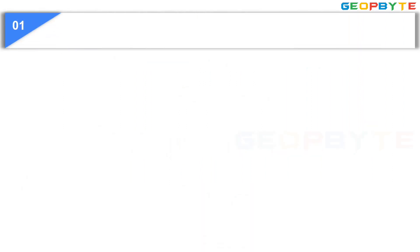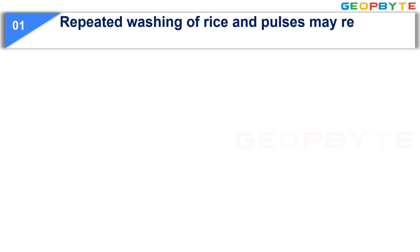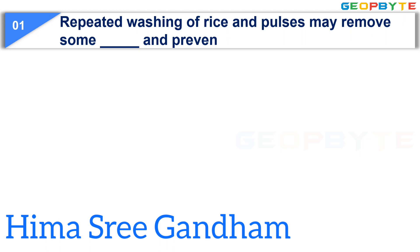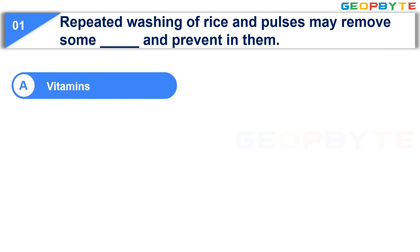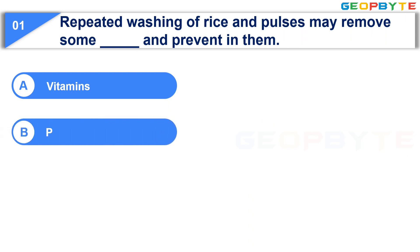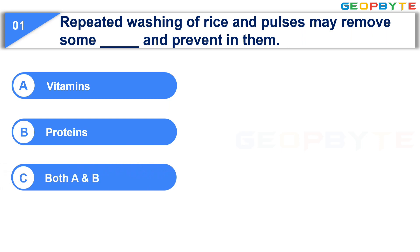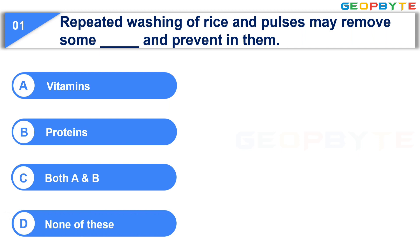The first question is: Repeated washing of rice and pulses may remove some blank and prevent in them. Option A: Vitamins. Option B: Proteins. Option C: Both A and B. Option D: None of these. Your time starts now.